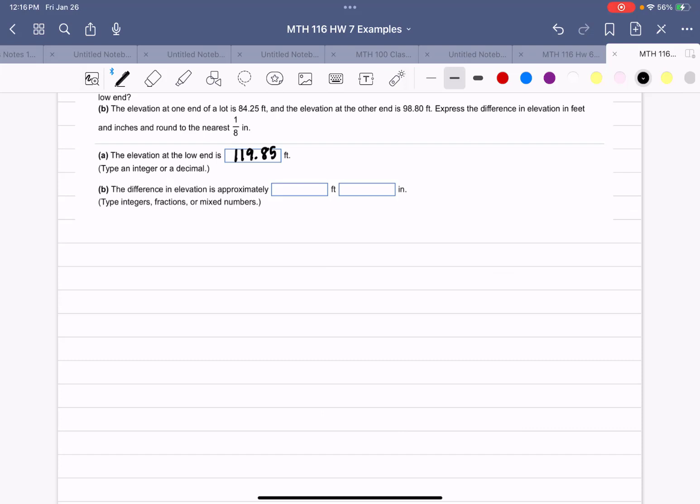Now part B. The elevation at one end of a lot is 84.25 feet. So here's our end of a lot, it's at 84.25. The other end is at 98.80, so it's higher up here at 98.80.